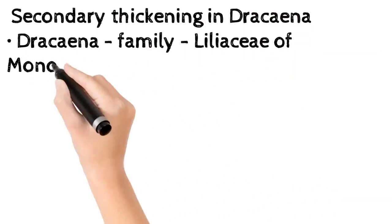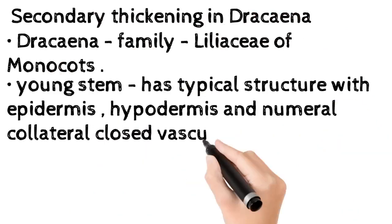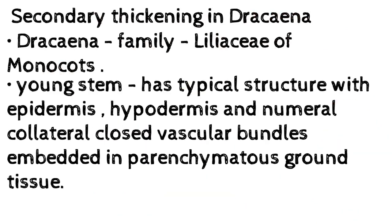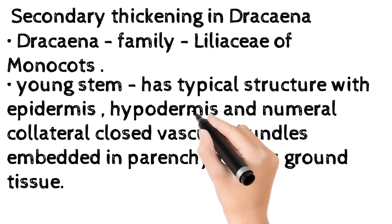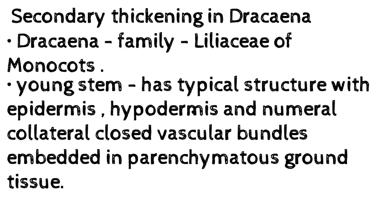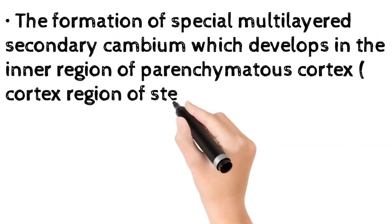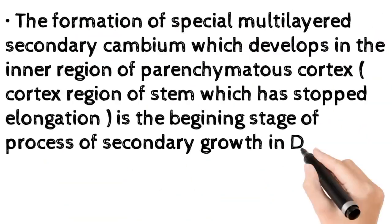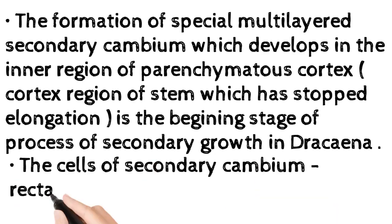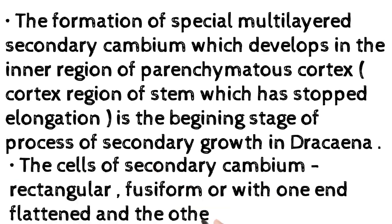Secondary thickening in Dracaena (family Liliaceae, monocots): the young stem has a typical structure with epidermis, hypodermis, and numerous collateral closed vascular bundles embedded in parenchymatous ground tissue. The formation of a special multilayered secondary cambium, which develops in the inner region of the parenchymatous cortex, is the beginning stage of the process of secondary growth in Dracaena.